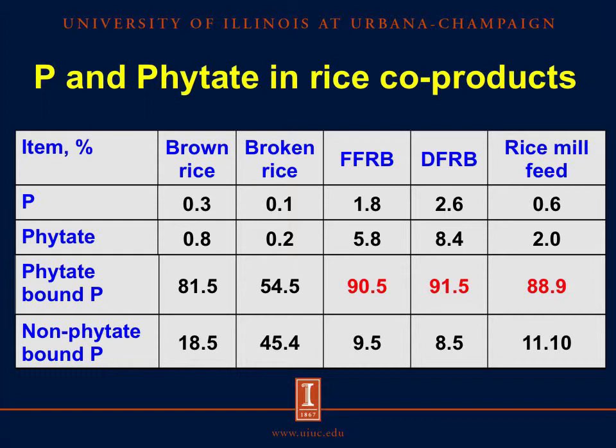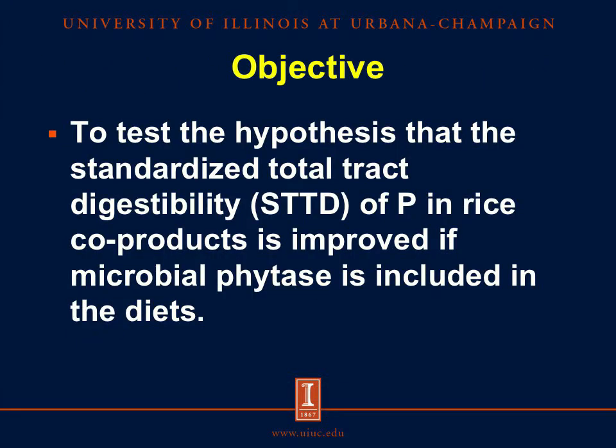However, concentration of phosphorus and phytate in all rice coproducts may vary depending on varieties of rice, climatic conditions, growing location, soil type, and the quality of the milling process. In consequence, the objective of this experiment was to test the hypothesis that the standardized total tract digestibility (STTD) of phosphorus in rice coproducts is improved if microbial phytase is included in the diets.